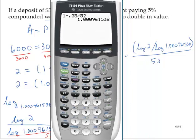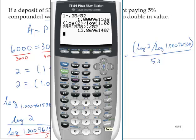So open quantity log 2, close the quantity on the logarithm, divide by logarithm 1.000961538, close the logarithm, close the numerator, divide by 52. And we have 13.87 approximately.